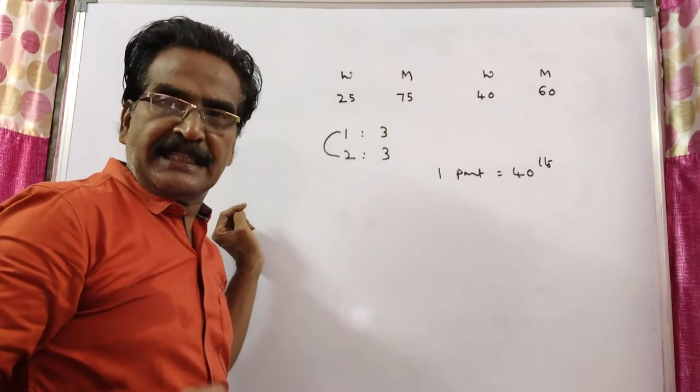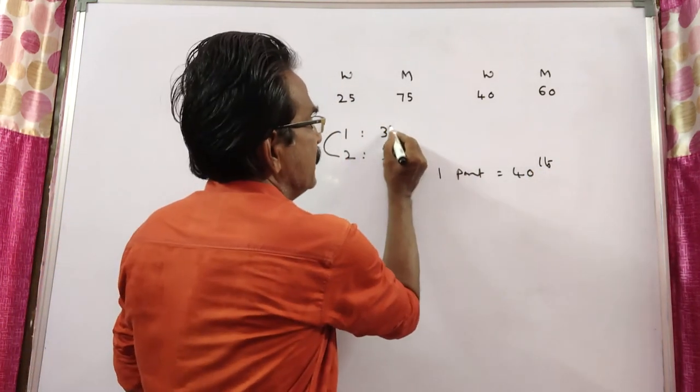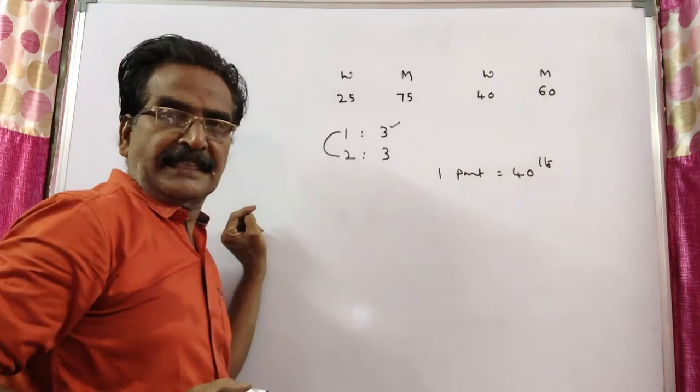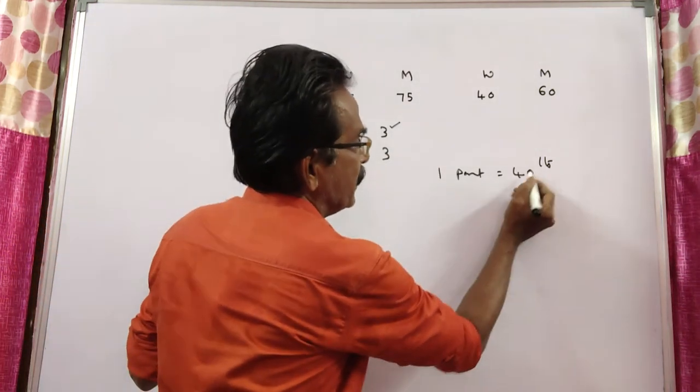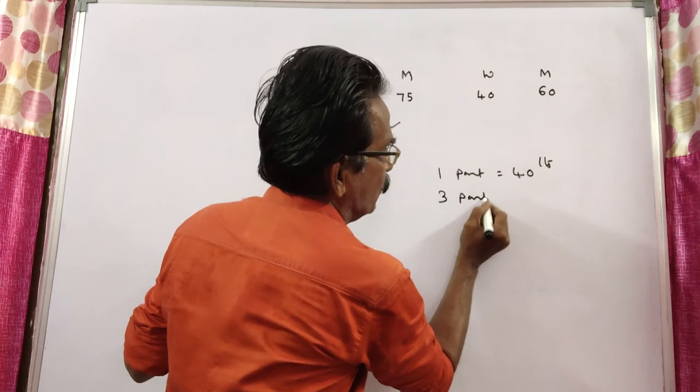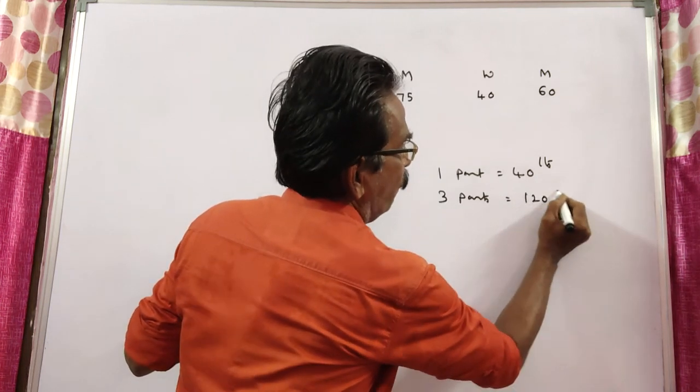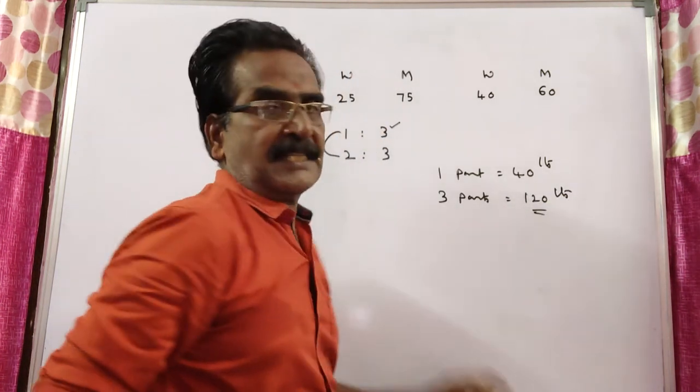Now we want the initial quantity of milk in the mixture. This is the initial quantity, that is 3 parts. 1 part is equal to 40 liters. 3 parts is equal to 120 liters. That's your answer.